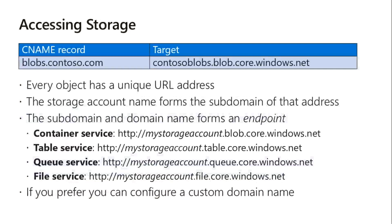For storage account connectivity, you will get a URL for every storage service you are trying to access - container, table, queue, and file. The URL format is: your storage account name, then a fixed domain like 'windows.net', and then based on the service you are using - blob, file, table - that option will appear in the URL. That is how you access your storage account.